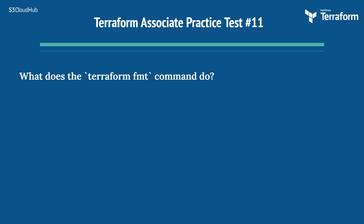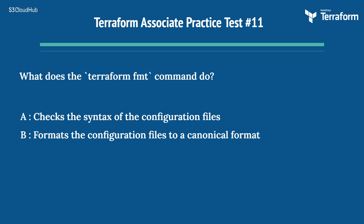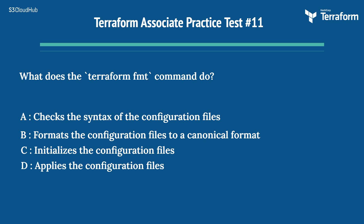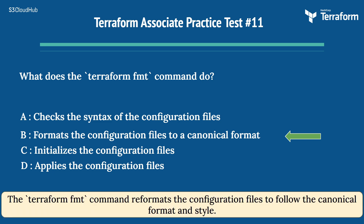The eleventh question is: what does the Terraform fmt command do? Option A: checks the syntax of the configuration files. Option B: formats the configuration files to a canonical format. Option C: initializes the configuration files. Option D: applies the configuration files. The right answer is Option B: formats the configuration files to a canonical format. The terraform fmt command reformats configuration files to follow the canonical format and style.